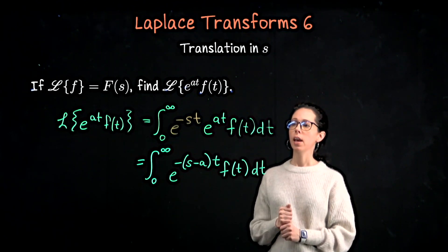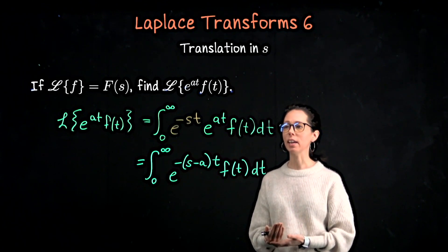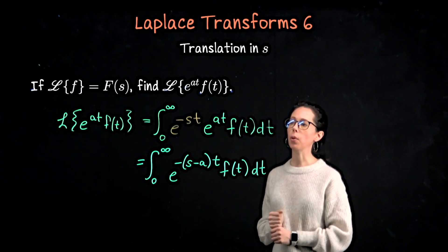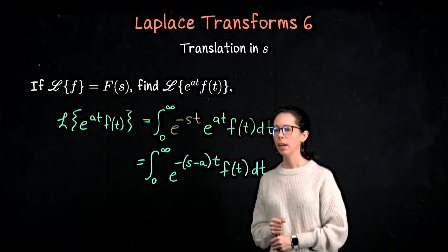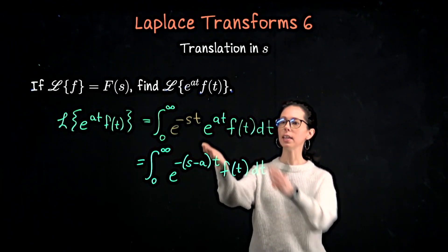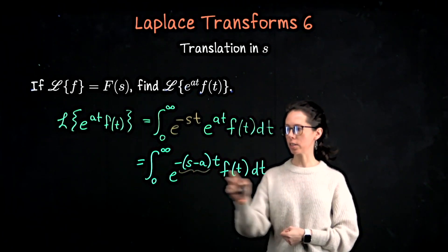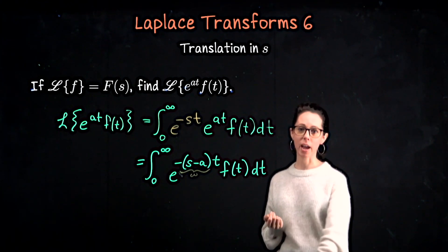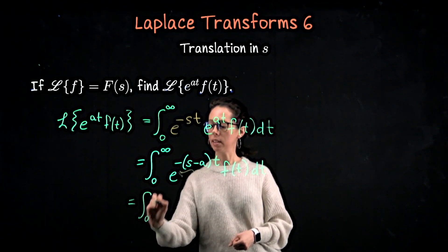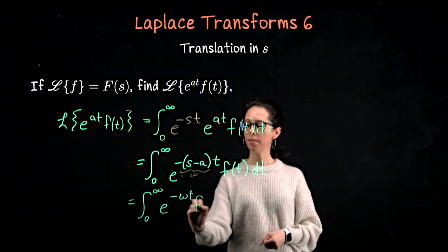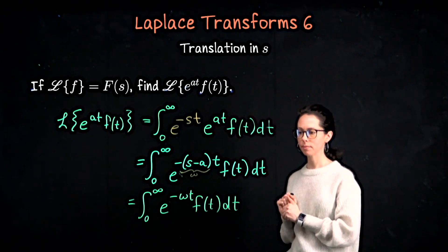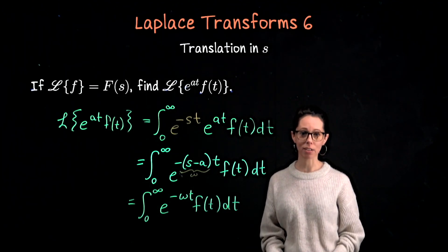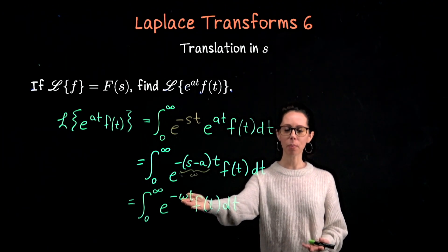This integrand has two variables: t, which is the variable we are starting with, and s, which is the variable of the Laplace transform of little f. Notice the way we set up a Laplace transform — it's e to the negative st times the function dt. What if I took the expression s minus a and called that w? We can write this as the improper integral from 0 to infinity of e to the negative wt f of t dt. This looks exactly like the definition of the Laplace transform of little f, except I've made a letter change — what we called s, we're now calling w.